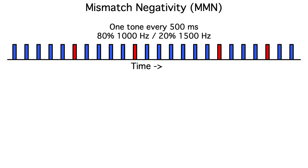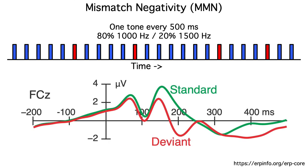Another interesting auditory component is the mismatch negativity. We see this component if we use an auditory oddball paradigm — for example, we might present a tone every 500 milliseconds, with 80% being 1000 Hz standard tones and the other 20% being 1500 Hz deviant tones. The deviant tones elicit a larger negative response than the standards around 200 ms. This is called the mismatch negativity, or MMN.